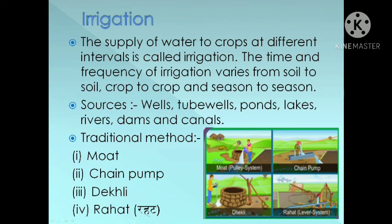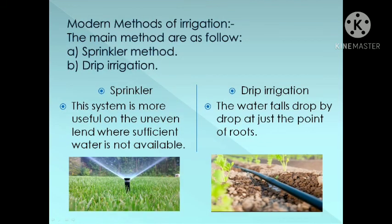Irrigation: This is the fourth step of crop production. The supply of water to crops at different intervals is called irrigation. The time and frequency of irrigation varies from soil to soil, crop to crop, and season to season. The sources of irrigation are wells, tube wells, ponds, lakes, rivers, dams, and canals. The traditional methods of irrigation are moat, chain pump, dhekli, and rahat.